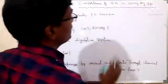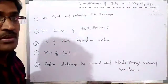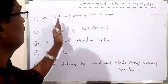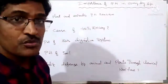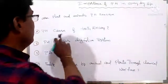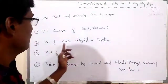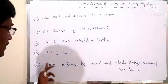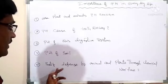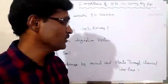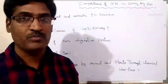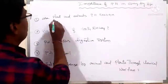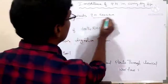Importance of pH in everyday life. pH is important for plants and animals — are they pH sensitive? pH causes teeth decay, pH of our digestive system, pH of soil, and self-defense by animals and plants through chemical warfare. We will discuss each one. Plants and animals are pH sensitive.